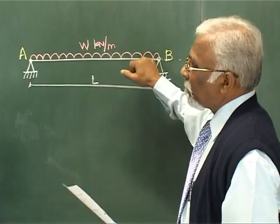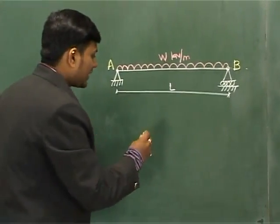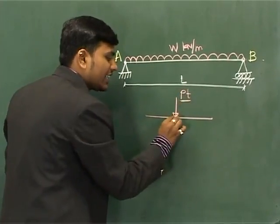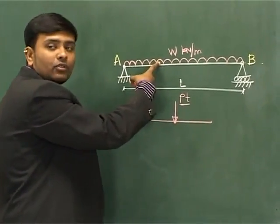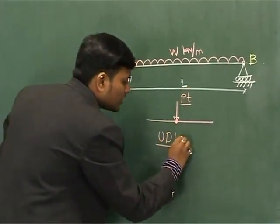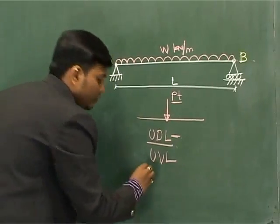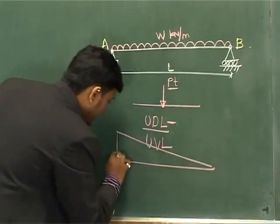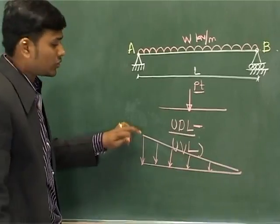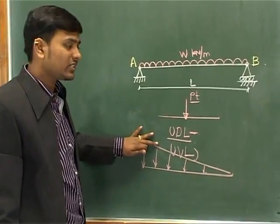Before answering, let's understand the load types. In structural language, there are three types of loads. The first is a point load — a load acting at a single point. The second is a uniformly distributed load (UDL), distributed over the entire area. The third is a uniformly varying load, where the magnitude is greater at one end than the other.